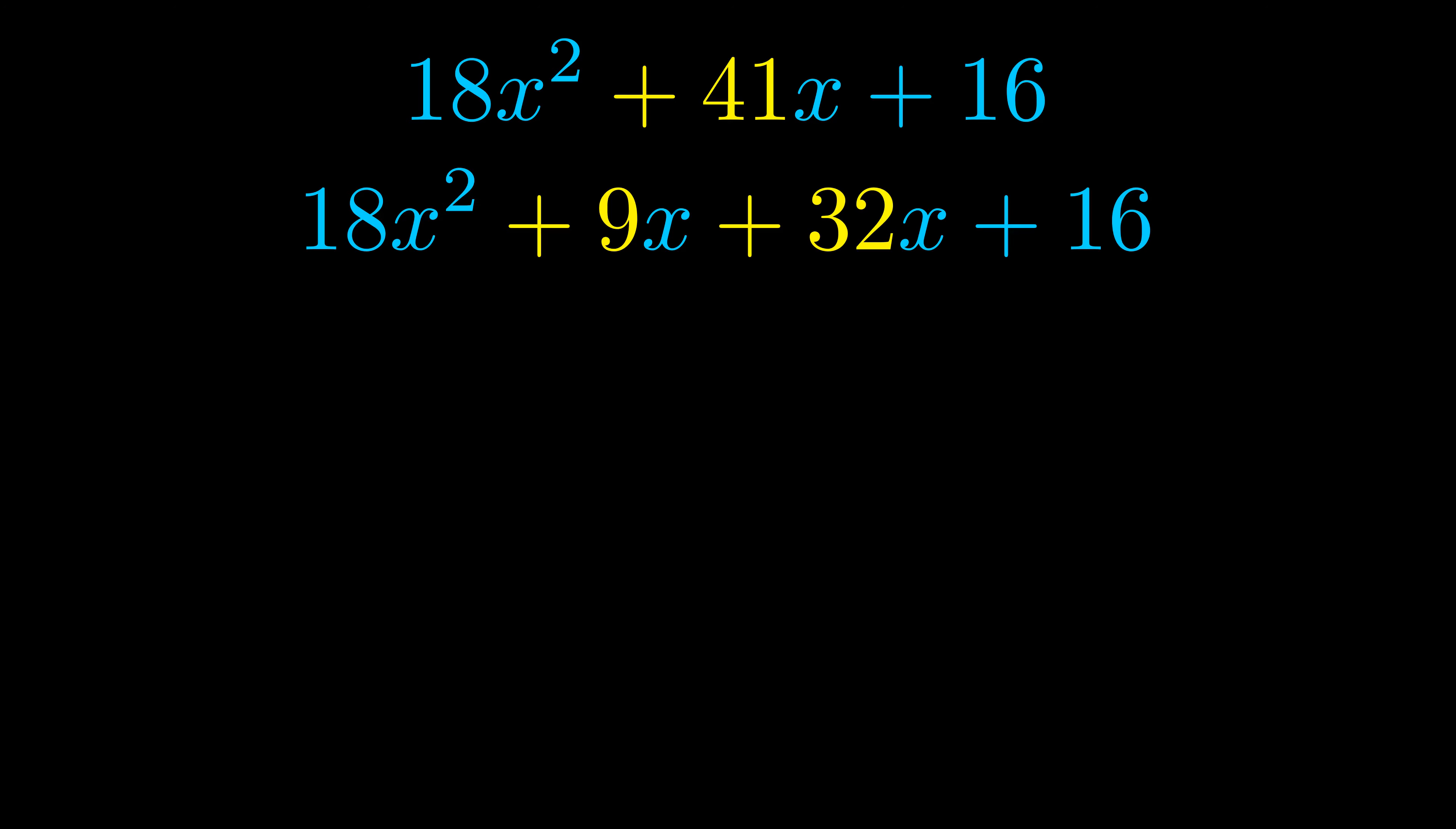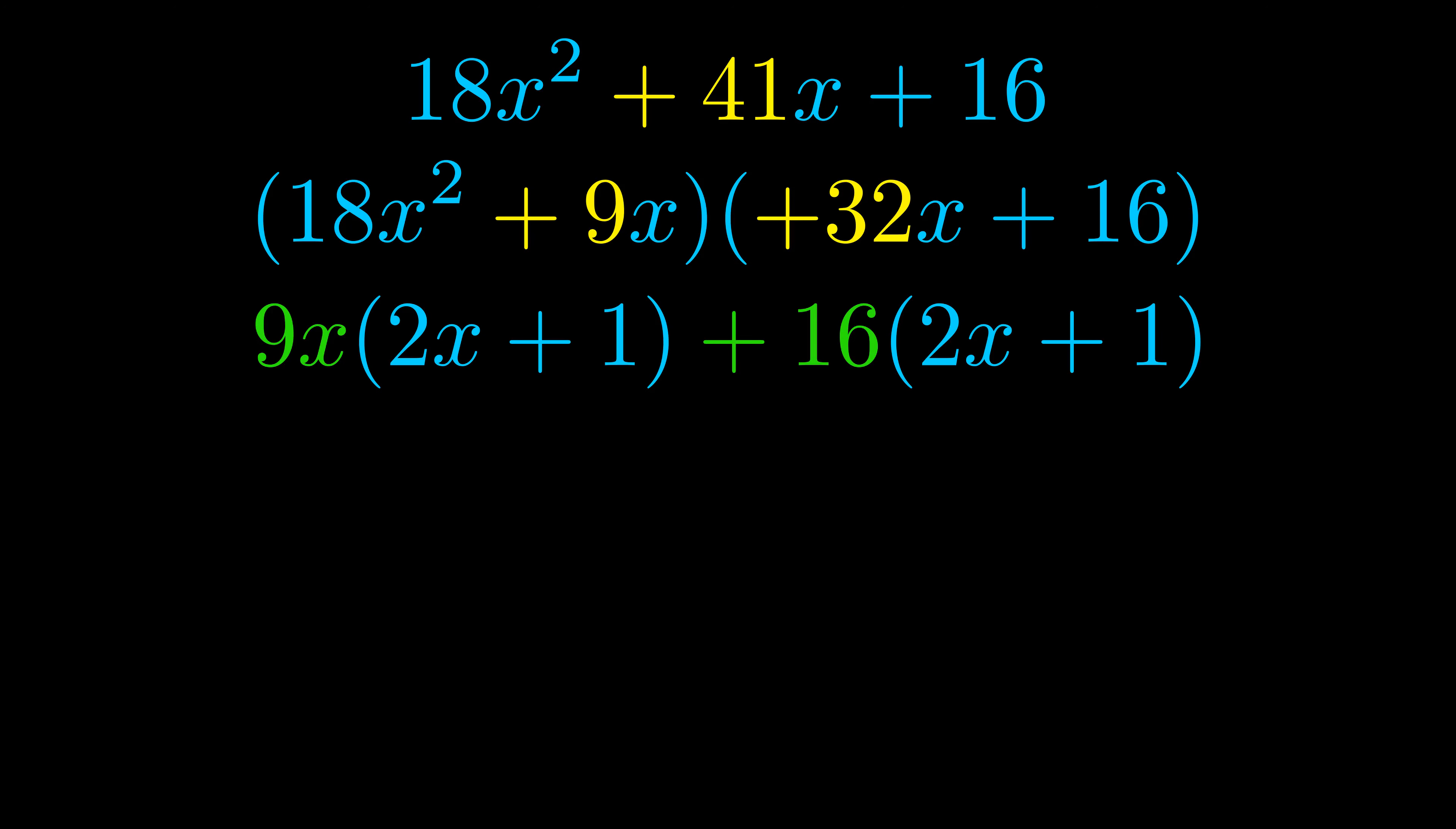Once we've done this we go ahead and we put parentheses around the first term and the last term. And we do that so that we can take the greatest common factor out of both terms. We can see the greatest common factor is now outside in green. Notice also how what remains inside of the parentheses is the same in both cases.